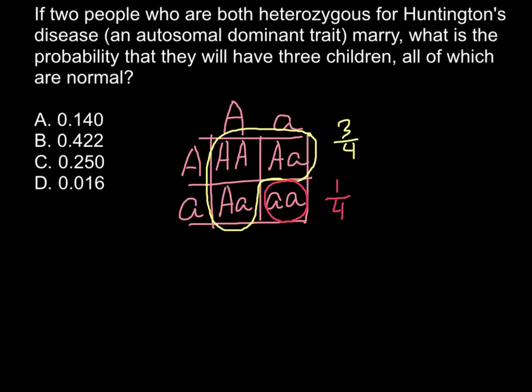And now we can easily solve this problem. We ask here what is the probability that they will have three children, all of which are normal. So we have one quarter chances for the child to be normal, and we have three children in a row.